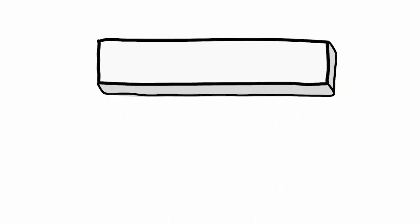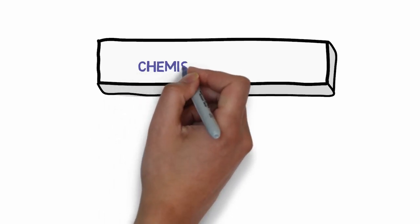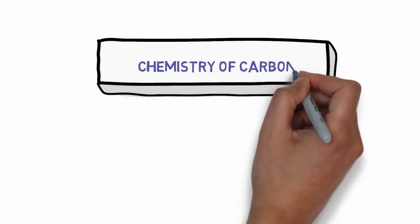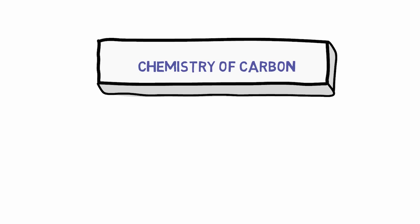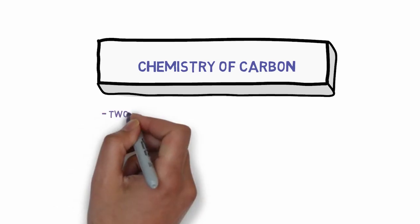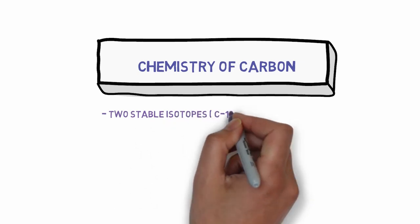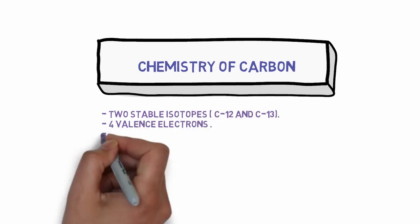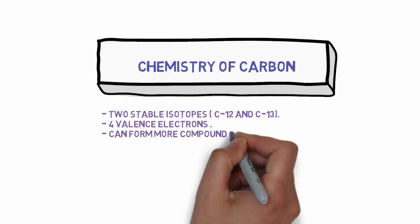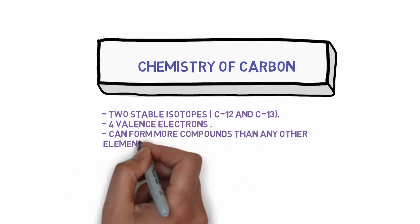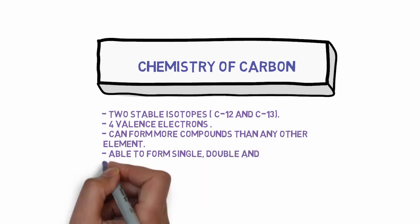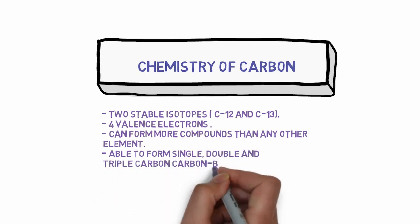Before we learn about organic chemistry, we must know about the chemistry of carbon. Carbon has two stable isotopes: C-12 and C-13. It has four valence electrons and can form more compounds than any other element. Carbon is able to form single, double, and triple bonds, and to link up with each other in chains or in rings.